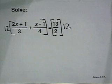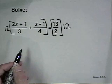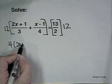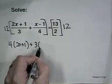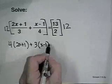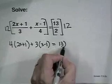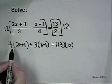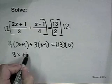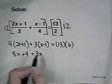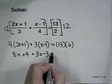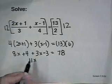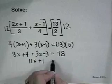In doing so, that makes the denominators cancel out, and we're left with 4 times (2x plus 1) plus 3 times (x minus 1) equals 13 times 6. Now we'll use the distributive property to get 8x plus 4 plus 3x minus 3 equals 78. We'll combine like terms: 11x plus 1 equals 78.